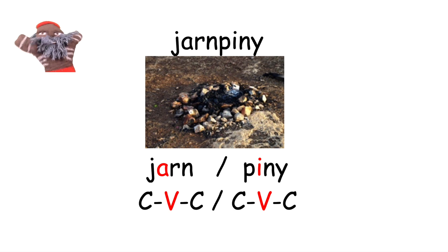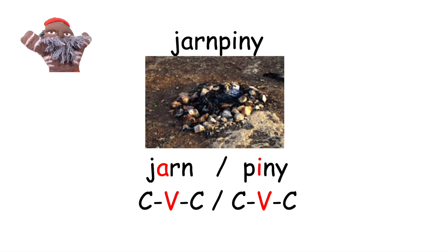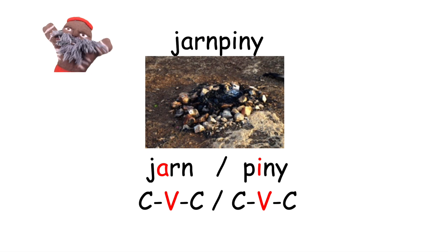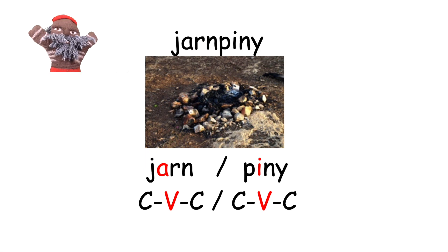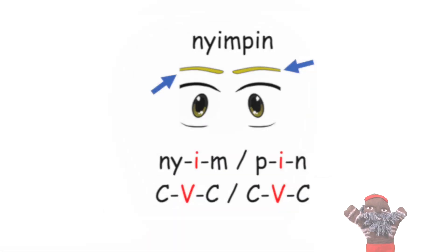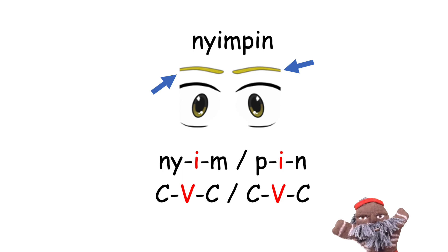The word 'Jarnbin' has two syllables. Each syllable has a consonant, a vowel and a consonant. Jarnbin.